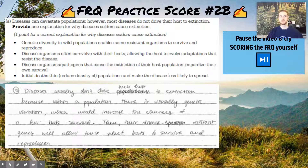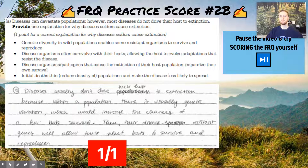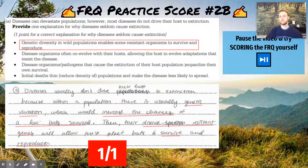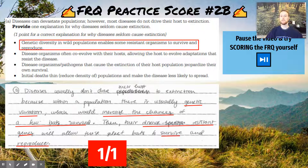Here we have another response to the same question — pause the video and see if you can score this answer. This would earn a point, specifically that first point the last student attempted. Notice the big difference: this student is using AP's vocabulary — they're actually mentioning genetic diversity or genetic variance, talking about how this increases the chances of survival for some of the bats, how those bats will be resistant, survive, reproduce, and pass on those resistant genes to their offspring. It's the same fundamental idea, but they've used AP vocabulary and explained themselves fully.